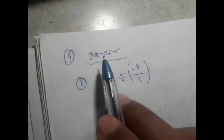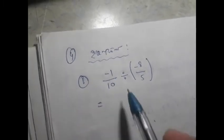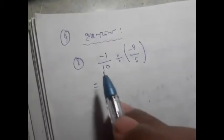So, what do we do now? This number is minus 1 by 10 and minus 8 by 5. Now, what do we do now?